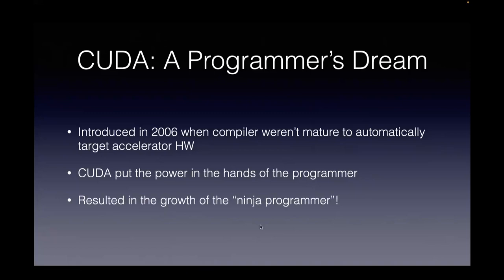This gave a lot of power to the programmer, resulting in the growth of what we call 'ninja programmers' — those who can take any kind of straight-line code, understand the parallelism built into it, and translate it to very high-performance CUDA code that executes well on a given NVIDIA GPU. It has been a remarkable journey since 2006, because it was with the birth of CUDA that GPU programming became accessible. Without it, since compilers were immature, it was very unclear how one would program such a beast.